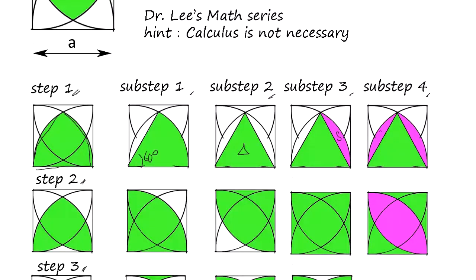So you double it and add the triangle back. So you get this area. Now step two.